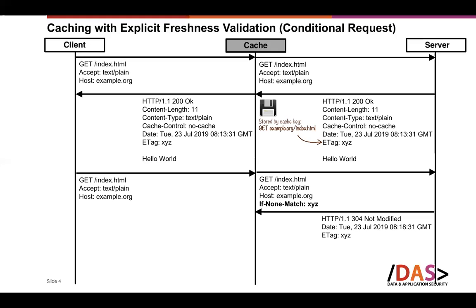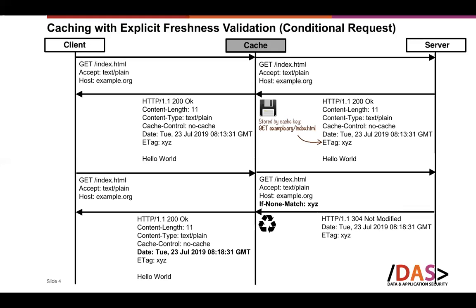If the resource is still fresh, the server generates a 304 Not Modified status code, informing the cache that it can reuse the stored response. One important thing the cache must do is update any new or updated header fields — for example, the Date header field — with a new timestamp. This is how the cache merges updated headers from the 304 response into the stored response.